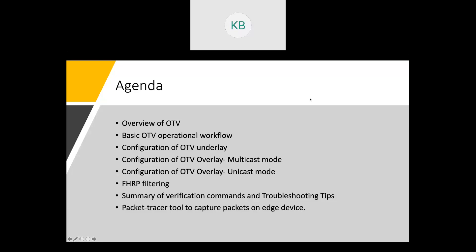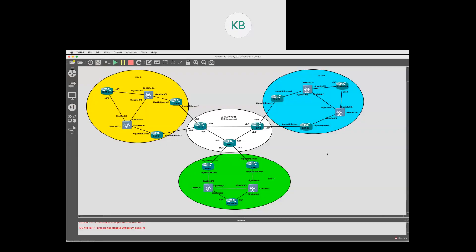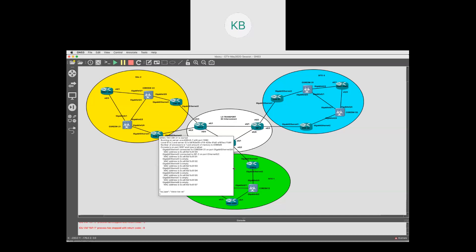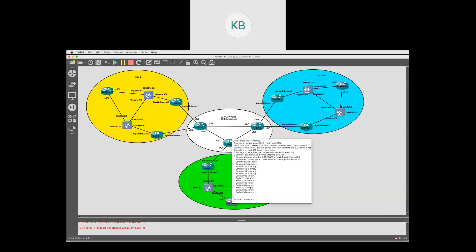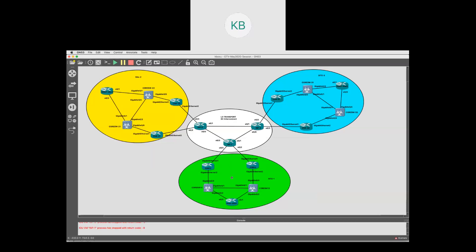Welcome to part 4 of this OTV module. In the previous three sections we covered the basic OTV overview, the operational workflow, the OTV underlay configuration, and we configured OTV in multicast mode to provide reachability between two sides. We had CSR11 in site 1 (green side) and CSR21 in site 2 (yellow side), configured the LAN segments and overlay interfaces to extend Layer 2 over OTV ISIS.